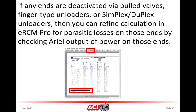To tune ERCM Pro more toward Ariel predictions for horsepower on deactivated ends, in the Ariel performance software generate performance on the compressor cylinder with some deactivated ends. Then go to the appropriate report and look at how much horsepower is being predicted on that deactivated end. In ERCM Pro, adjust the deactivated resistance factor for that cylinder head end to a number that comes closer to predicting that horsepower.